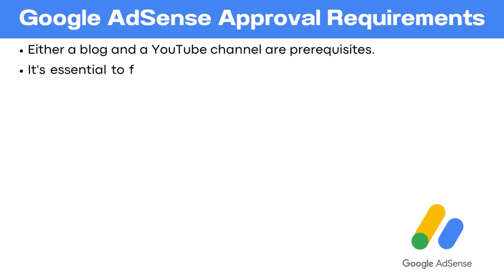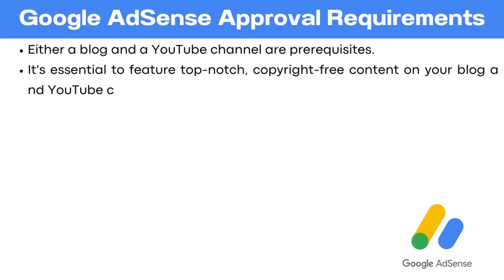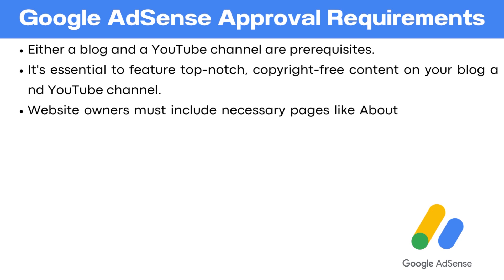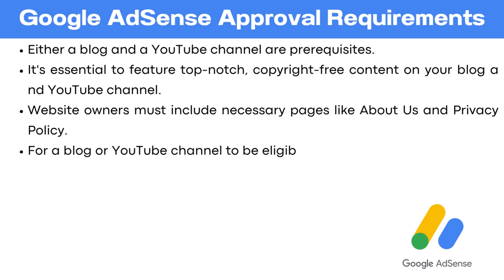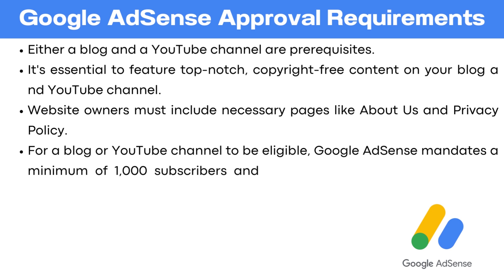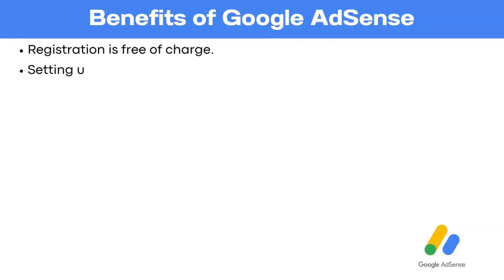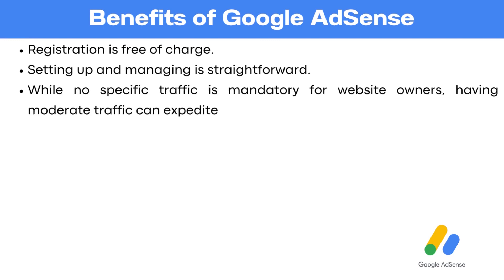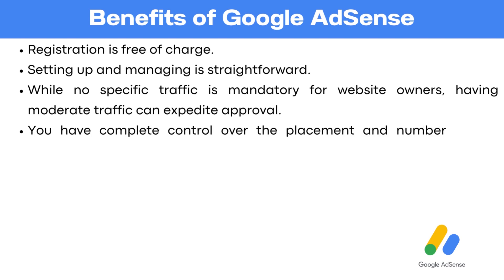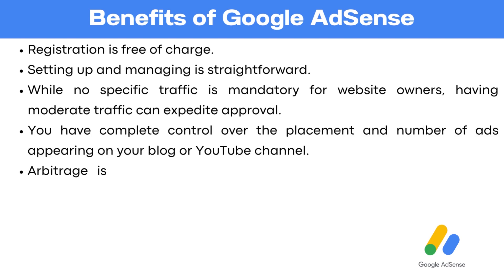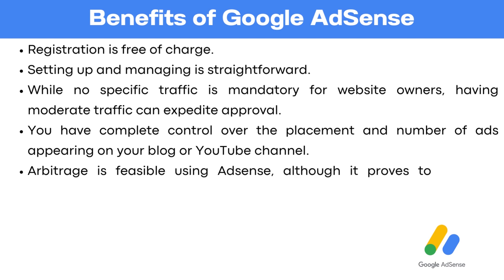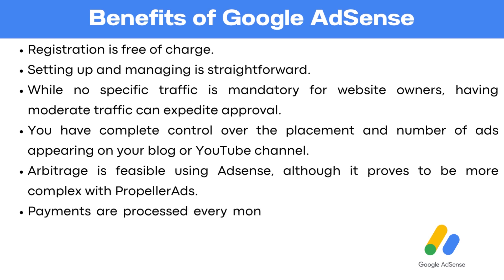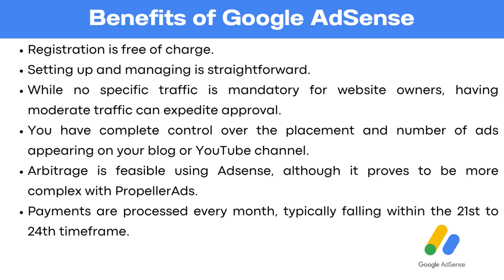Google AdSense approval requirements: either a blog or a YouTube channel are required. It's essential to feature top-notch copyright content on your blog and YouTube channel. Website owners must include necessary pages like About Us and Privacy Policy. For a blog or YouTube channel to be eligible, Google AdSense mandates a minimum of 1,000 subscribers and 4,000 watch hours for the channel to be accepted. Benefits of Google AdSense: registration is free of charge. Setting up and managing is straightforward. While no specific traffic is mandatory for website owners, having moderate traffic can expedite approval. You have complete control over the placement and number of ads appearing on your blog or YouTube channel. Arbitrage is feasible using AdSense, although it proves to be more complex with Propeller Ads. Payments are processed every month, typically falling within the 21st to the 24th.